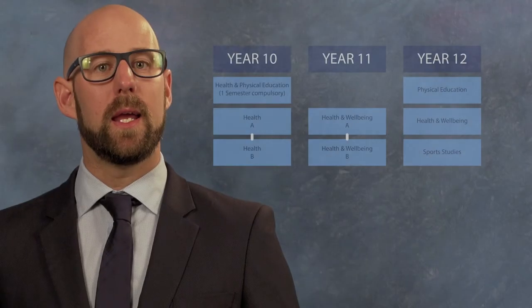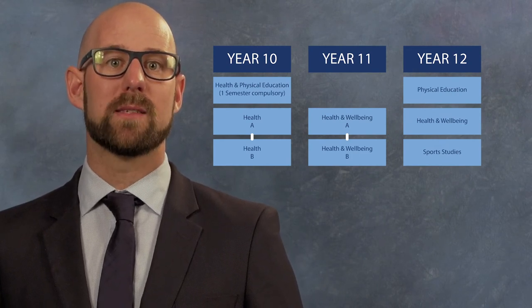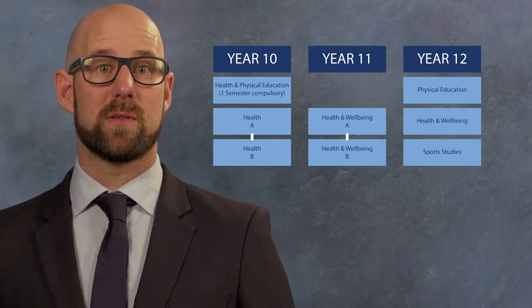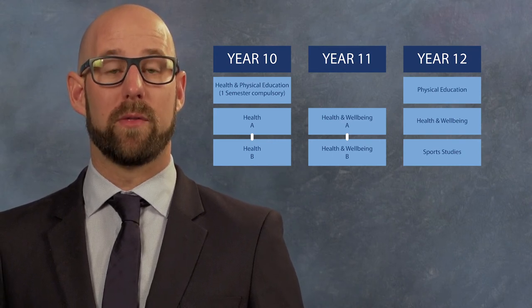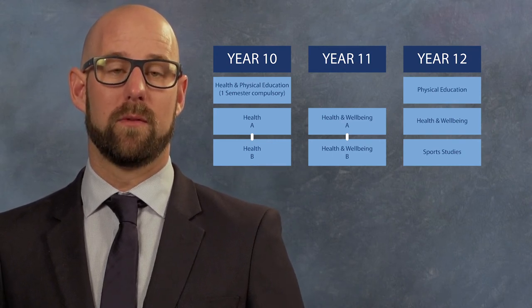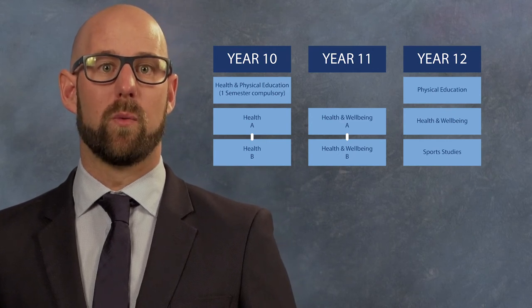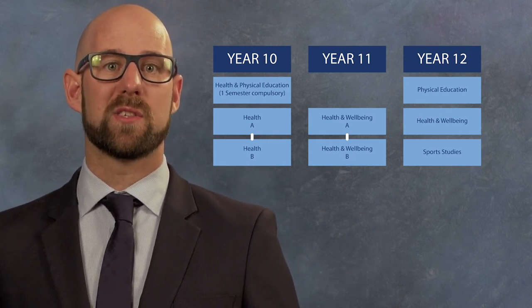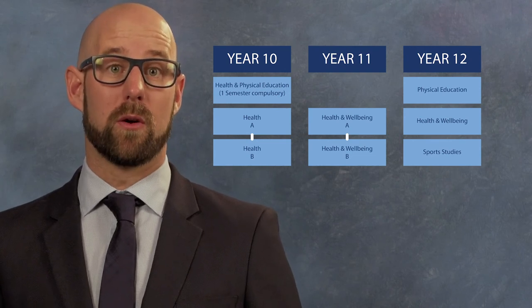These courses offer a flexible framework for your learning. In Year 10, students complete one semester of compulsory health. However, they can select an additional semester to form a full year course in both years by selecting the health elective. In Year 11, students can select a one semester course of health, or select both the A and B variant to form a full year course.